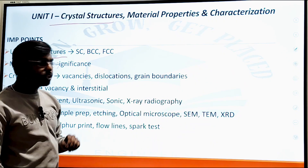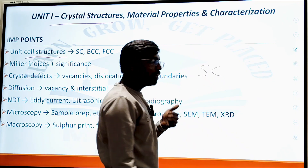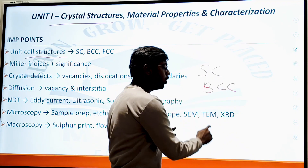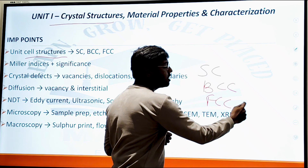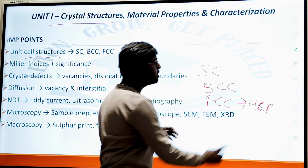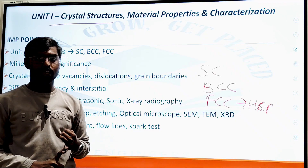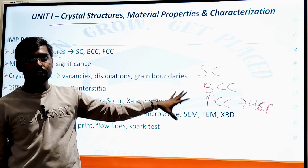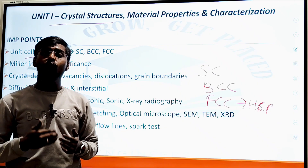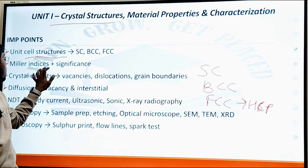The first important topic in this unit is crystal structure. The four types are: SC (simple cubic), BCC (body-centered cubic), FCC (face-centered cubic), and sometimes HCP (hexagonal close-packed). Based on these, we first draw the crystal structure diagram, then derive equations and prove how to find the relevant values using those equations.